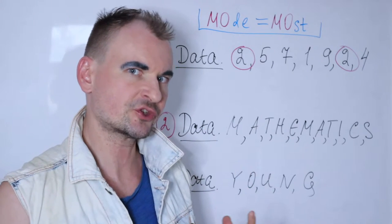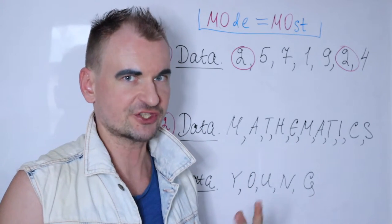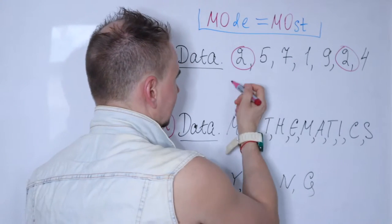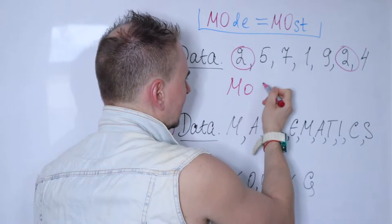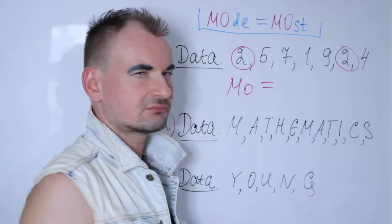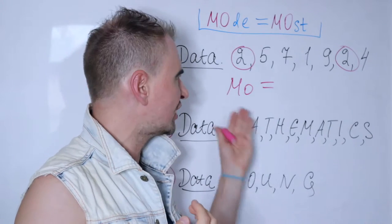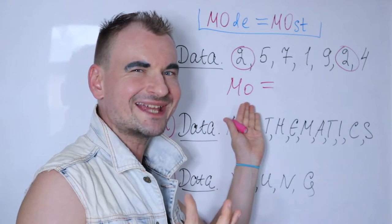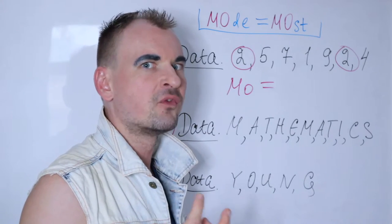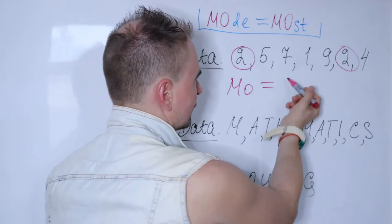All other numbers are completely different. So your mode is going to be just 2. You write it down. Usually mode is abbreviated to just the first two letters, so MO usually stands for the mode. The mode is just 2.